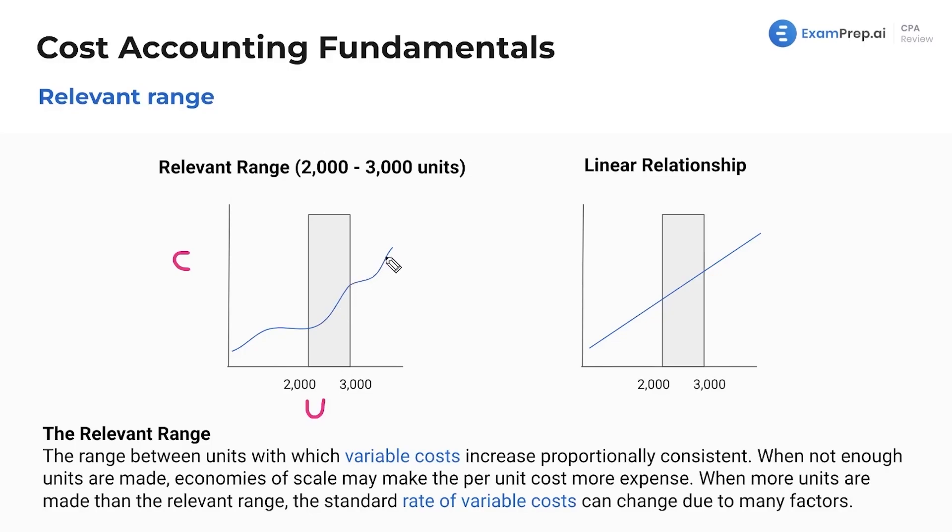And then maybe after a certain amount, whatever happens, it just goes off the deep end. There's no proportion. Your variable costs are not proportionally consistent. And this is just a concept to know for some multiple choice questions.